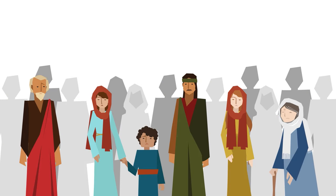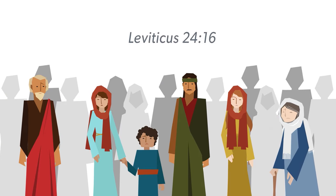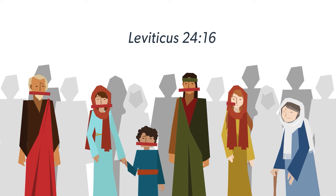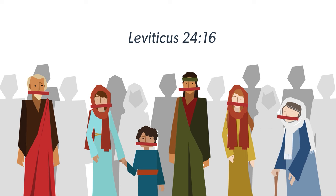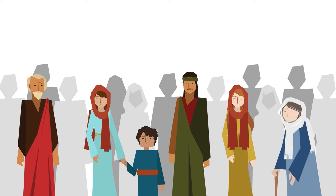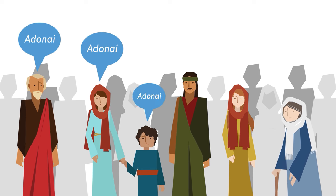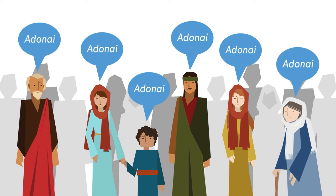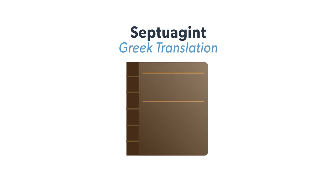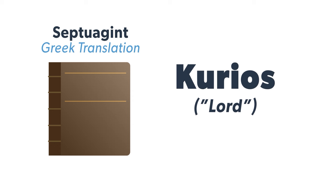Due to a fear of accidentally taking God's name in vain, the Jews basically quit saying it out loud altogether. Instead, when reading scripture aloud, the Jews substituted the Tetragrammaton YHWH with the word Adonai, or Lord. Even in the Septuagint Greek translation of the Old Testament, the translators substituted Kyrios for the divine name.